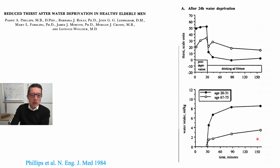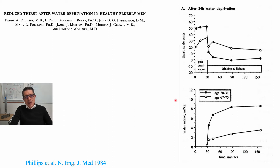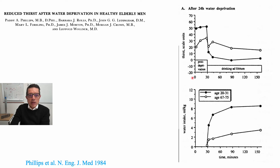I'll start with some older data — published in 1984 in the New England Journal of Medicine by Phillips and colleagues and Barbara Rawls — where they took older adults and did 24-hour water deprivation. The data from younger counterparts and the data from older adults show that older adults don't get as thirsty as younger adults when exposed to dehydration by 24-hour water deprivation.